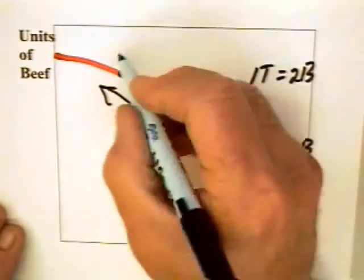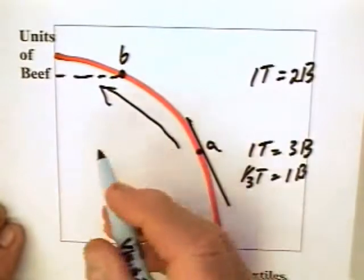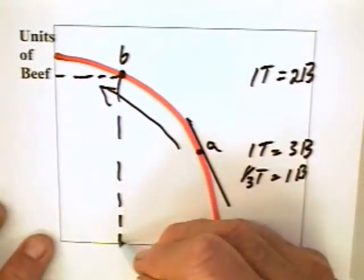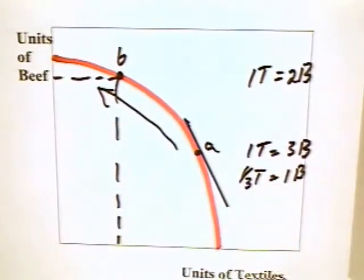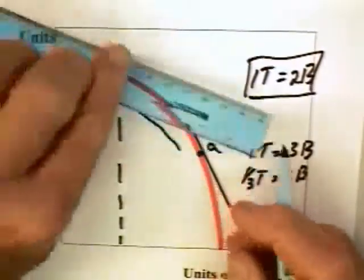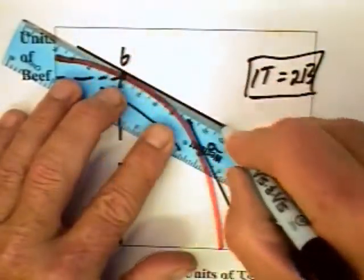At some point, say point B, it can no longer justify moving further up toward the specialization of beef production. But it can now trade at this ratio here, which means it can move out on a curve that looks something like this.